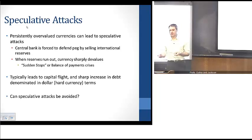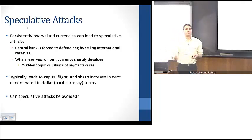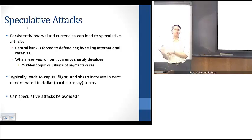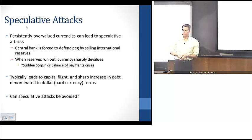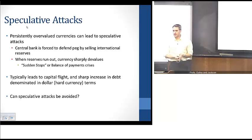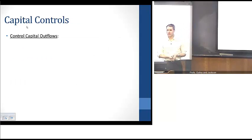So ultimately the question is: can speculative attacks be avoided? If we have these overvalued pegs and we want to maintain them, are there ways to get around that and avoid these speculative attacks and the possibility that the central bank has to constantly intervene to defend these pegs?